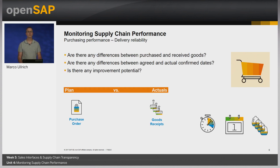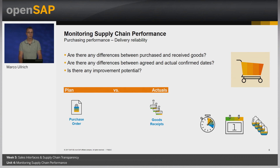Moving from Supply Chain Management to Purchasing, also known as Supplier Relationship Management: delivery reliability of a supplier is an important KPI to analyze whether the supplier kept to the delivery schedule and quantities. This report shows an analysis of purchase order delivery dates and quantities by suppliers, answering questions like whether there are differences between purchased and received goods, between agreed and confirmed delivery dates, or where improvement potentials exist.